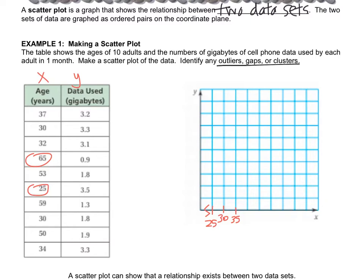For the y-values, which is data used, my lowest is 0.9 and my highest is 3.5, so I'll go by 0.5s. I'll label the x-axis as 'age' and the y-axis as 'data used.'